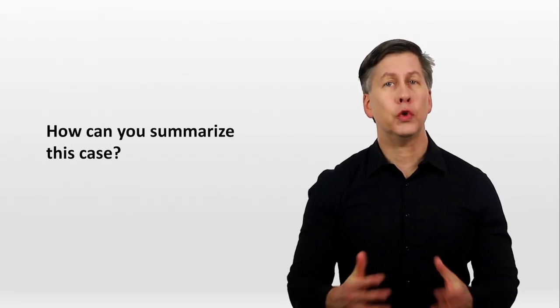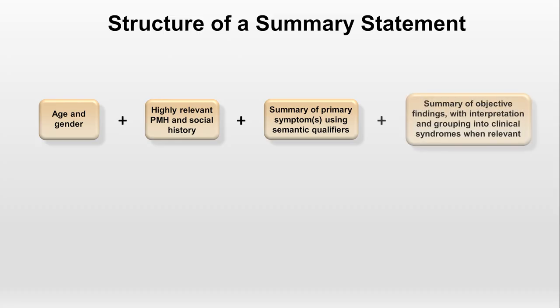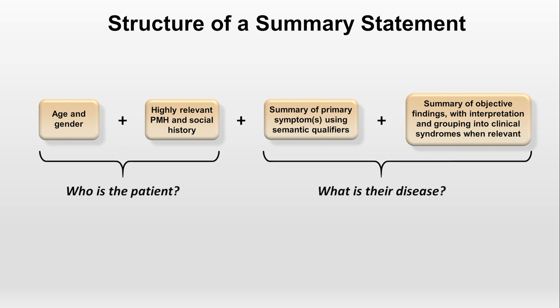Now we have a history, exam, and some diagnostic tests. How would we summarize Judy's case? There are many ways to construct a summary statement, but the following structure works best for 99% of patients who are inpatients or presenting to an ER or urgent care clinic. Consider four components: age and gender; highly relevant past medical and social history; a summary of the primary symptom or symptoms using semantic qualifiers; and a summary of objective findings with interpretation and grouping into clinical syndromes when relevant. In short, the first half answers who is this patient, and the second half answers what is their disease.